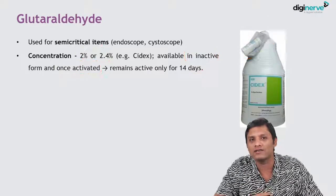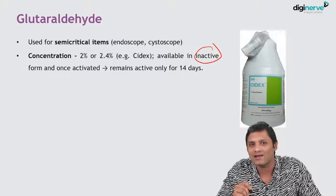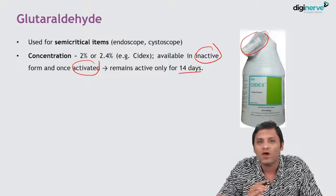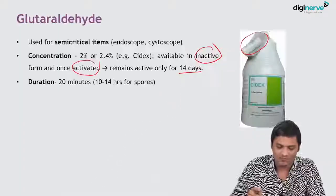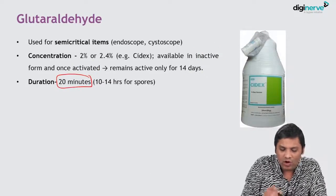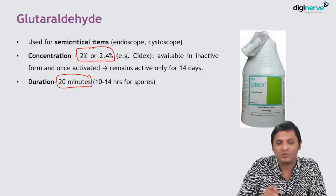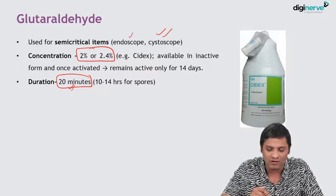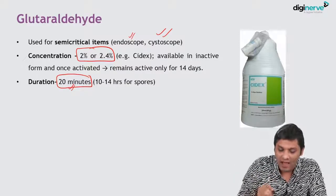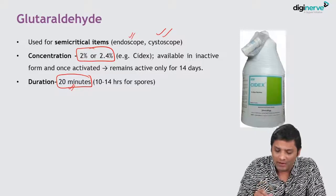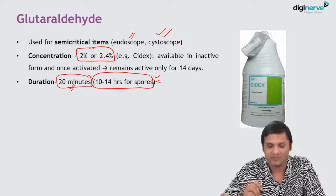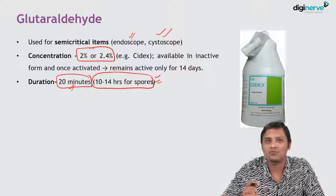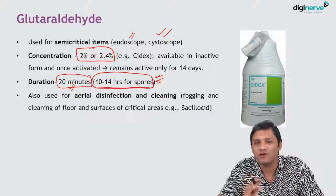A drawback of glutaraldehyde is that it is available in inactive form and must be alkalized before use by adding the activator solution. Once activated, it must be used within 14 days. The duration of disinfection is around 20 minutes at a concentration of 2 to 2.4 percent for high-level disinfection of endoscopes and laryngoscopes. It can also be sporicidal, but for that you must disinfect for a period of 10 to 14 hours.